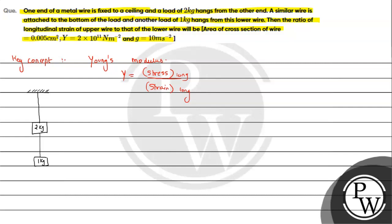Then for the ratio of longitudinal strain of the upper wire, we have to label wire 1 and wire 2. Now, wire 1 tension will be T₁ and wire 2 tension will be T₂. If we talk about T₁, it will be 2g plus g, which equals 3g.